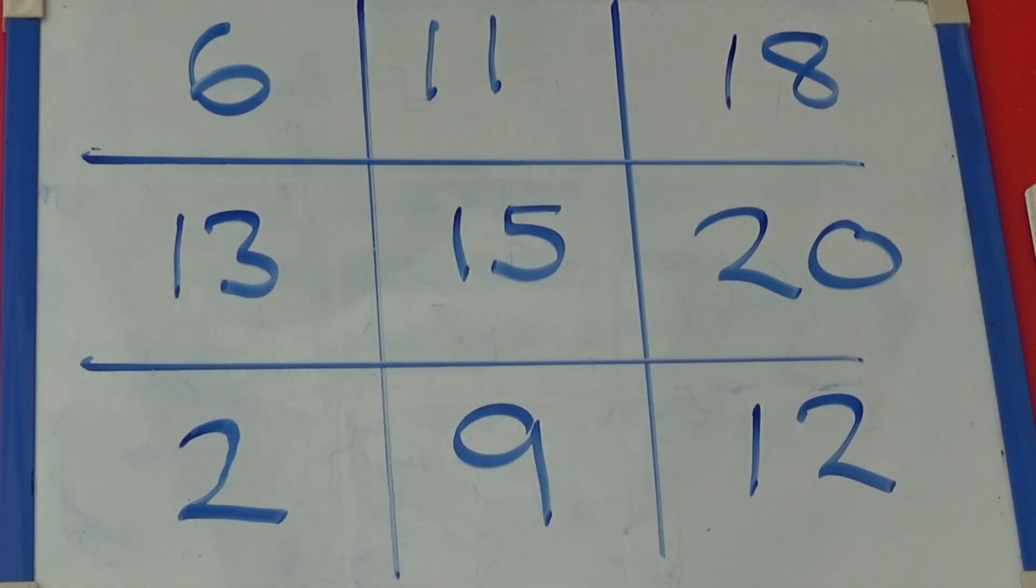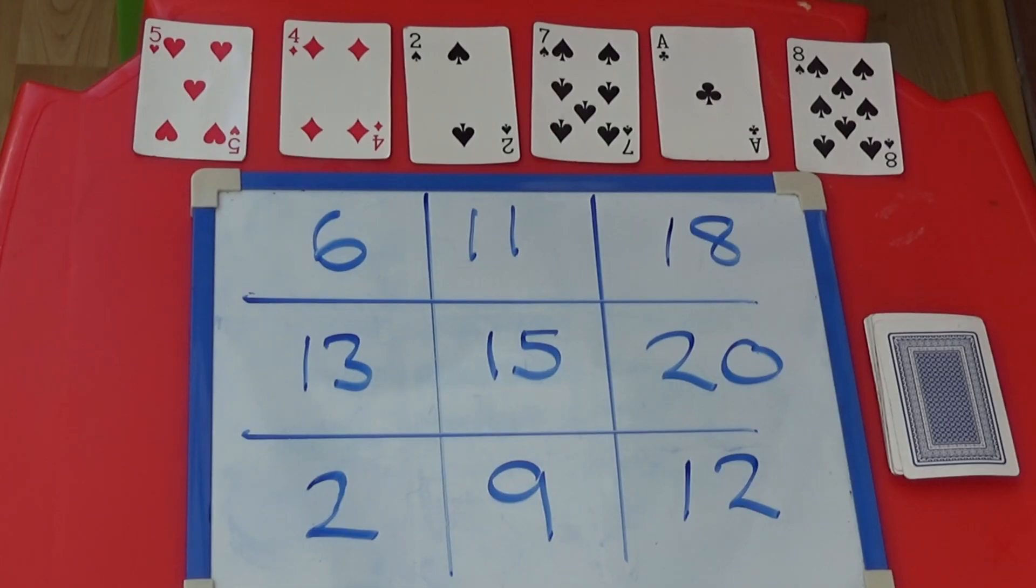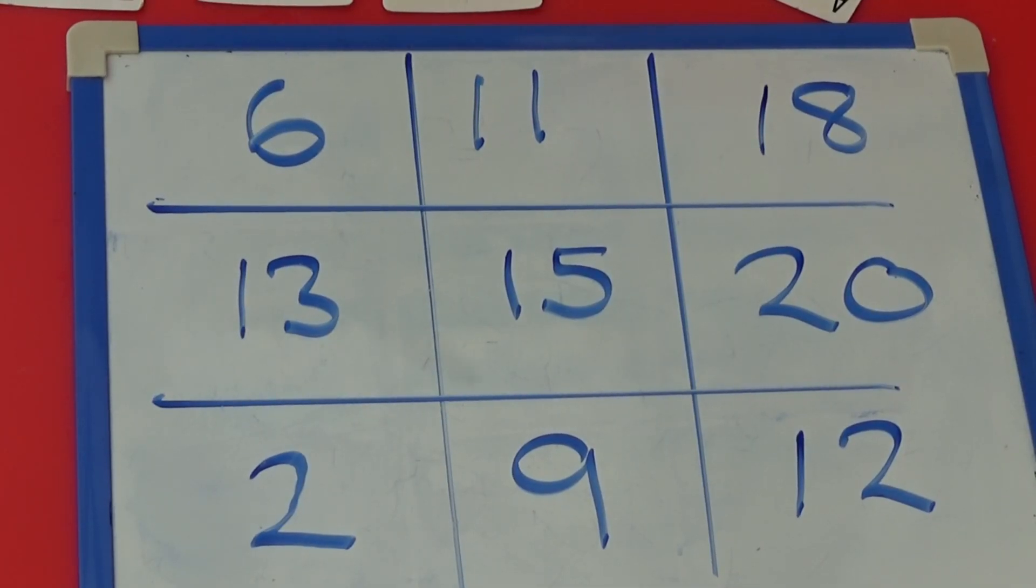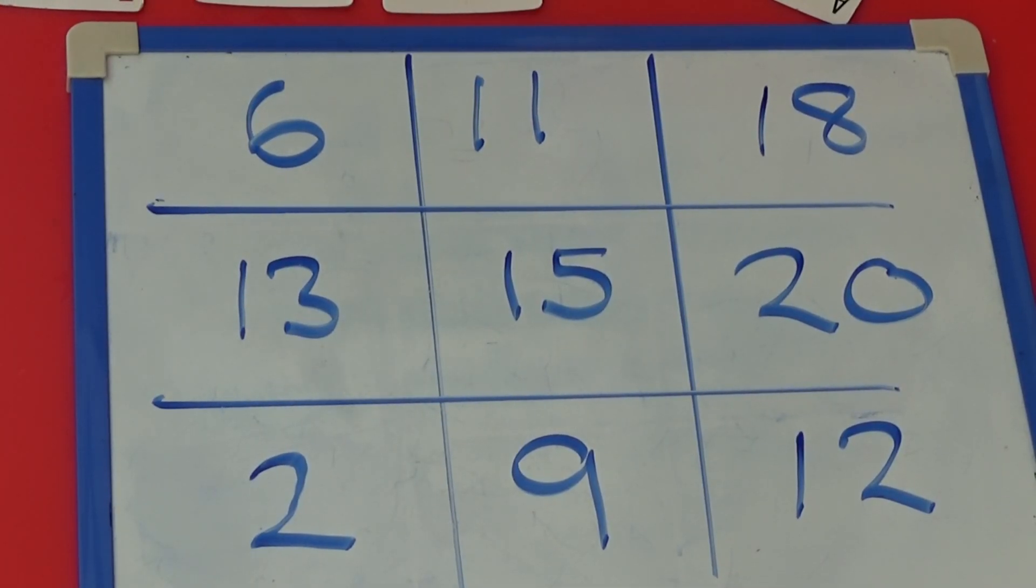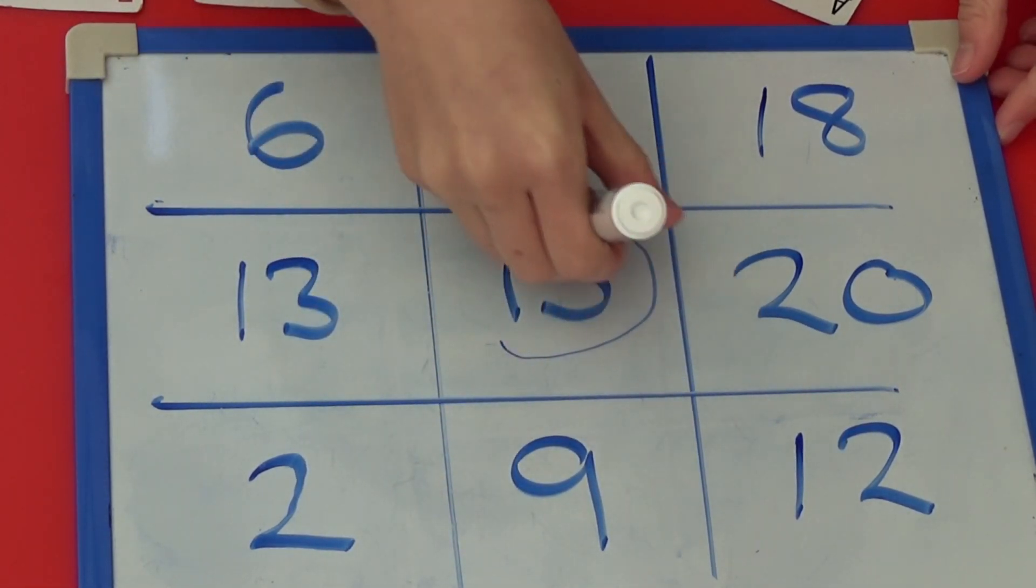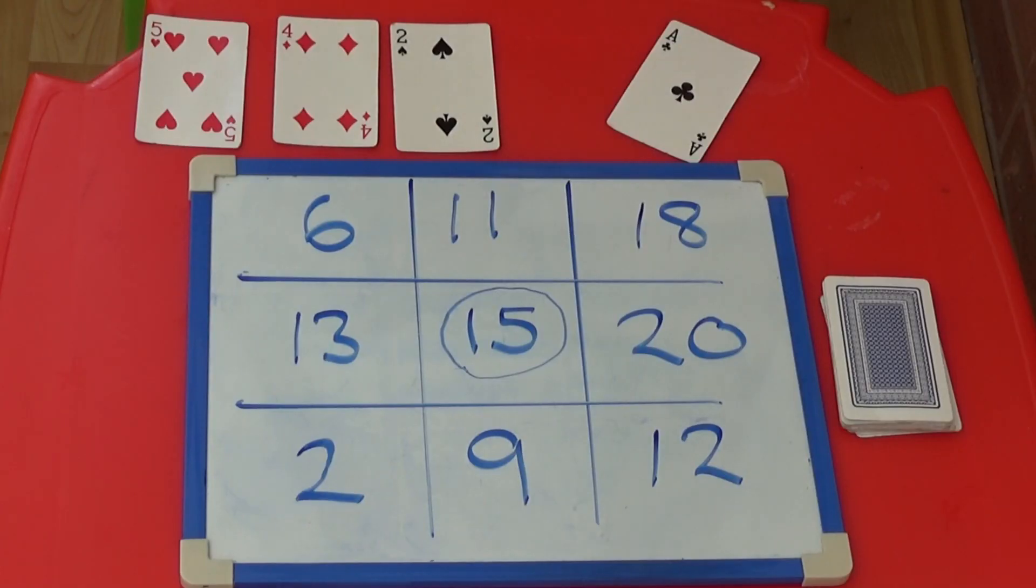I'm going to try and make the middle number which is 15. I have a 7 and an 8 so I'm going to use them and say 7 and 8 equals 15. As I have made the number in the square I am going to draw a dot on that number to show it's mine. I then need to replace the 2 cards I've just used with 2 new cards.